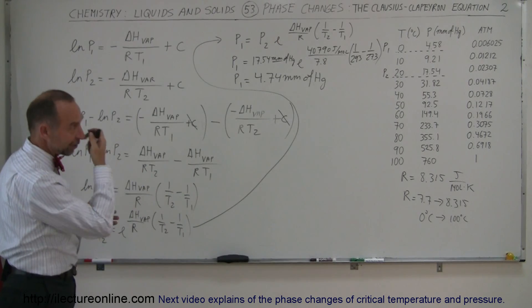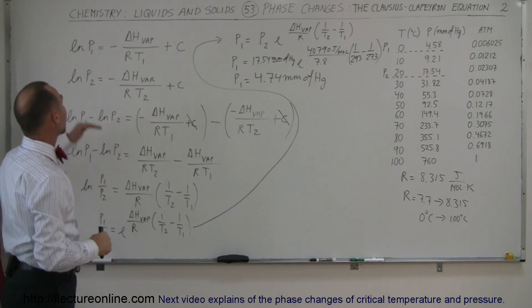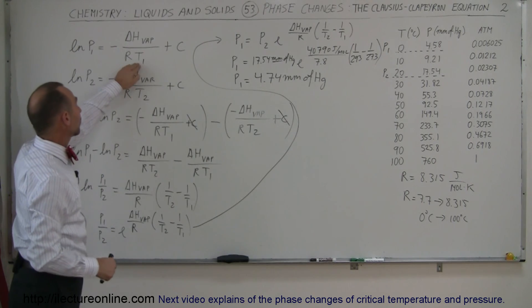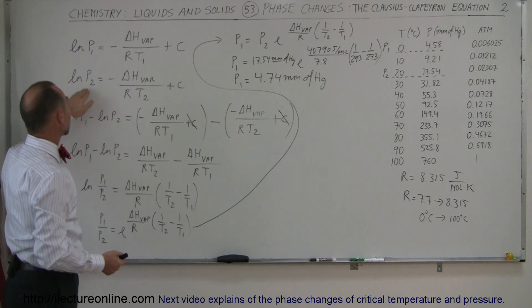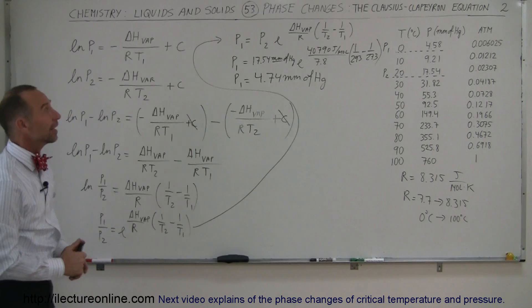The Clausius-Clapeyron equation is actually very handy in different ways. If you know the pressure at a particular temperature, the vapor pressure, you can then calculate the pressure at a different temperature using this particular equation. Pretty neat technique.